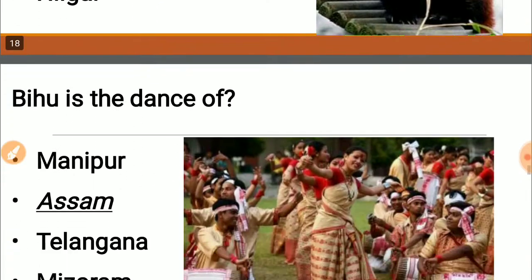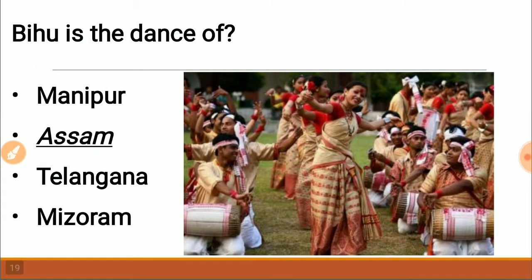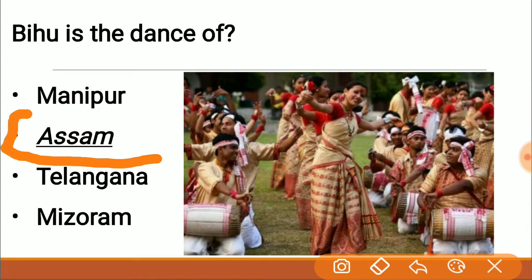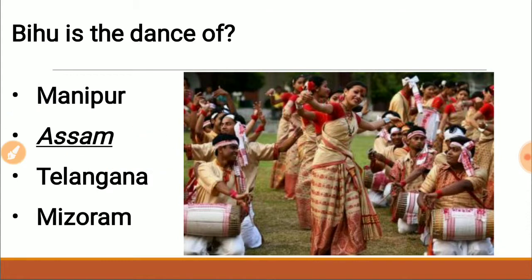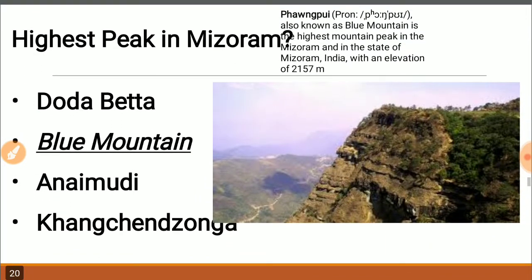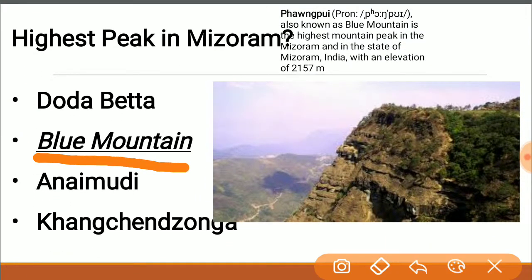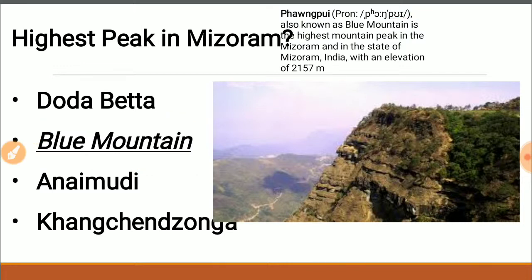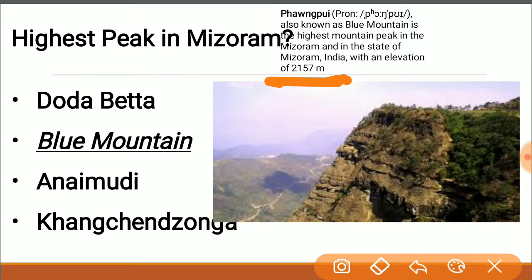Bihu is the dance of Assam — a very beautiful dance locally known as Bongai Bihu. The highest peak in Mizoram is the Blue Mountain, locally known as Phawngpui. It is also known as the Blue Mountain and is the highest peak in Mizoram at an elevation of 2,157 meters — approximately one-fourth the height of Mount Everest at 8,848 meters.